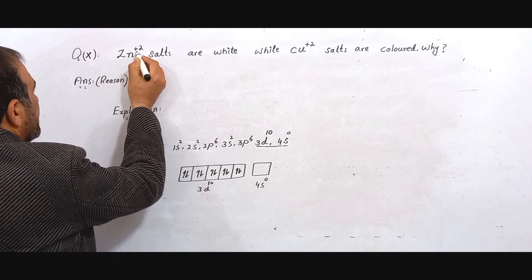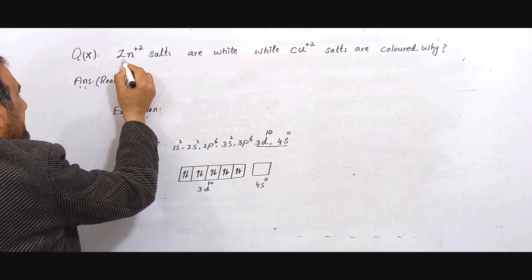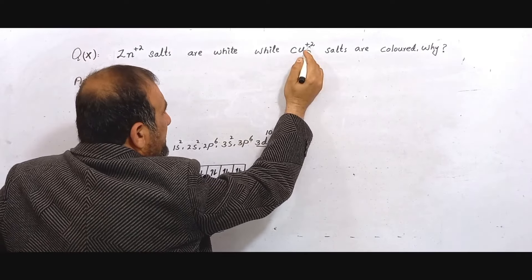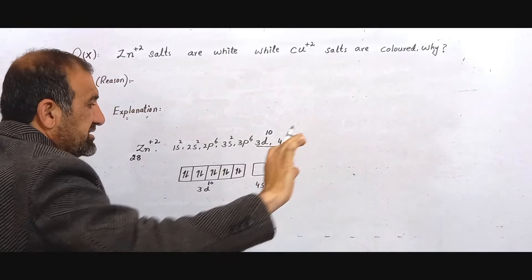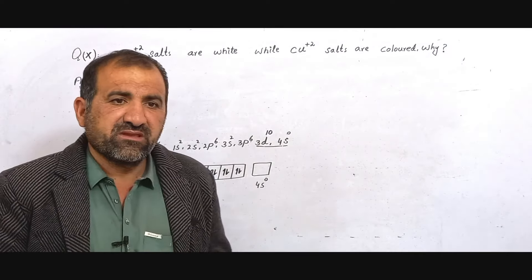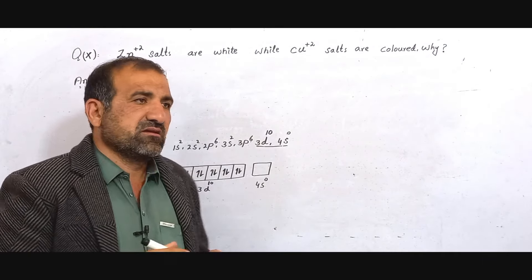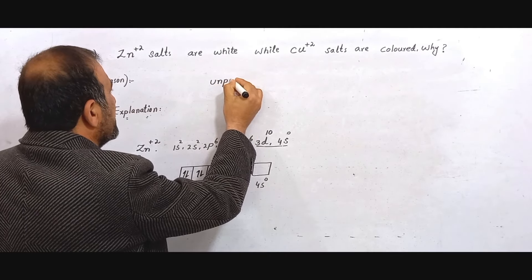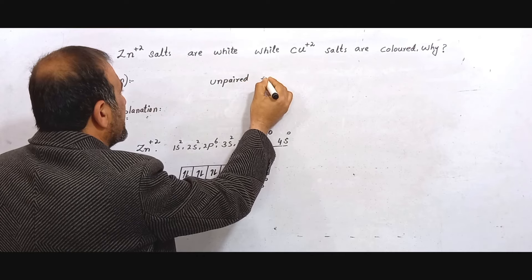Zn²⁺ and Cu²⁺ - Zn compound is colorless white while Cu²⁺ compound is colored. The reason is that to form a color compound, unpaired electrons are required. Unpaired electrons must be present.